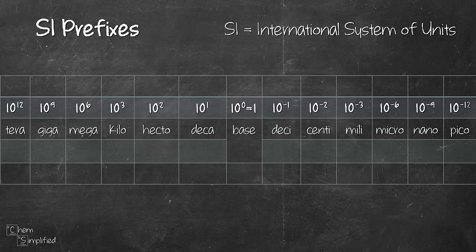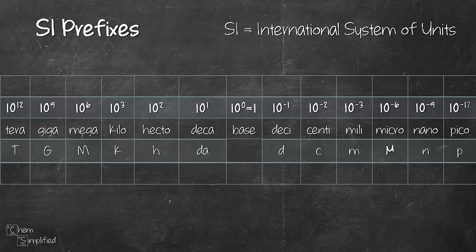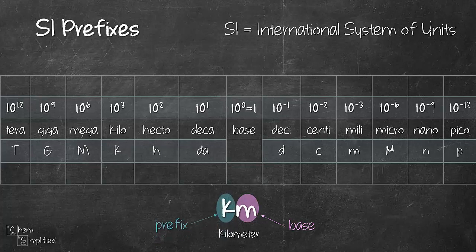Sometimes when you see prefixes being used they are abbreviated like this. Like capital T to represent terra, small letter d to represent deci. So how do we use prefix and base? Let's take kilometer for example. That's a unit for distance. So meter in this case is the base unit. K which stands for kilo is the prefix.